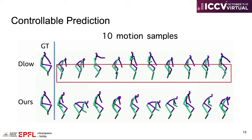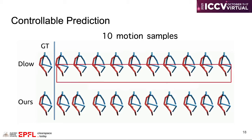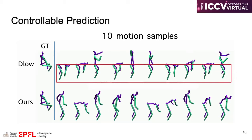We also show the results of controllable prediction. By training a new model, DLO is able to predict future motions with similar leg motions,